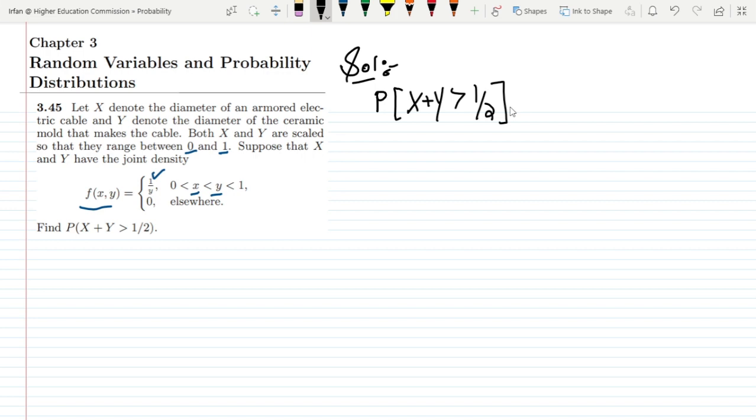In order to find it we can clearly see that in terms of CDF it can be found by using 1 minus probability of X plus Y less than 1/2. Let me find it out. Here we can see that both values of X and Y and their summation should be less than 1/2. So in order to make this happen, let me take the value of X from 0 to 1/4, so that the summation of X and Y will be less than 1/2.